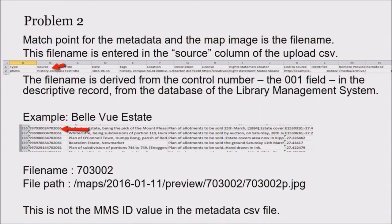Problem two: the History Pin bulk uploader uses the file name as the match point for the metadata you're going to load. SLQ's file naming convention for maps has the file name derived from the control field — the 001 of the descriptive record — which comes from the database of the library management system. We've had three databases and two library management systems since map digitization began. The MMS ID number exported from the current library management system is not what the files are named, and you need the file name to get the file path to get the file you want to upload.